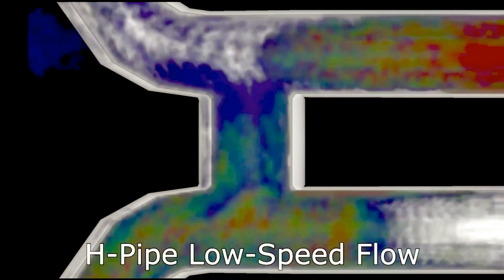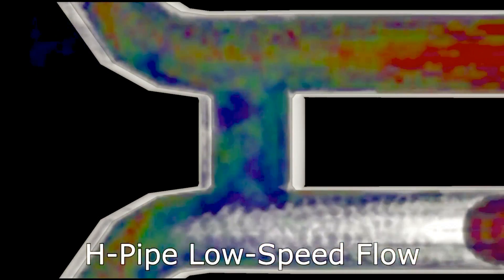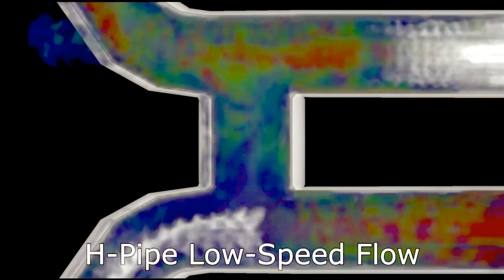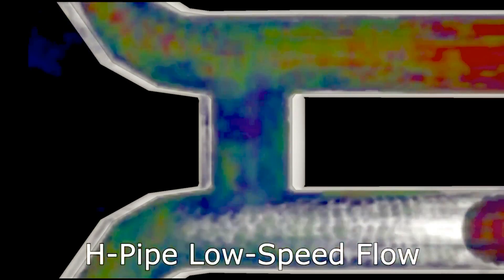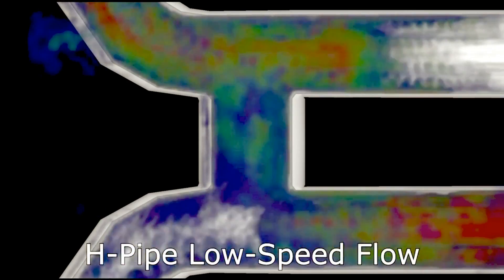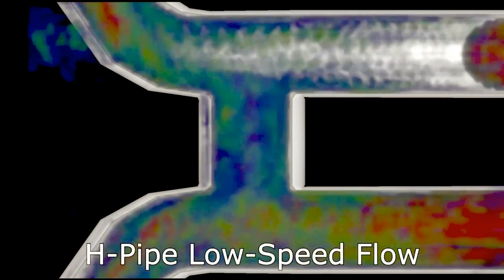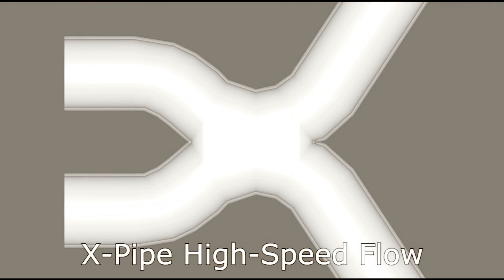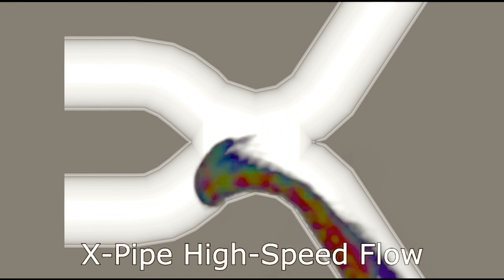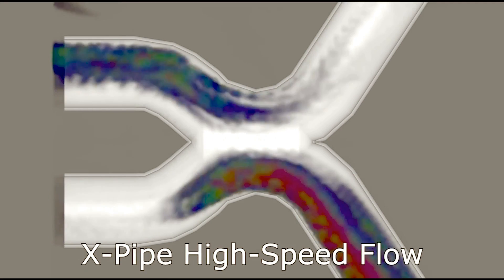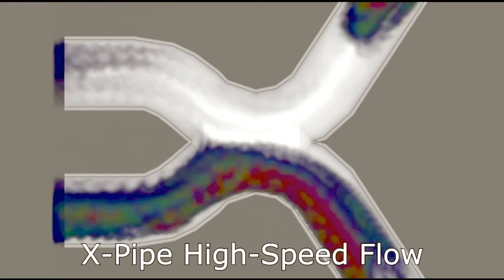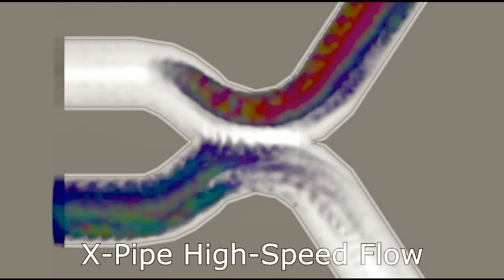Scavenging will only be effective at lower RPMs, where there's a bunch of time between the pulses. As the RPM rises, the pulsed flow becomes more and more like constant flow, and the scavenging effect will start to decline, increasing back pressure. At higher RPMs, a large flow area is needed for the faster escaping of exhaust gas, meaning a larger diameter pipe is needed.